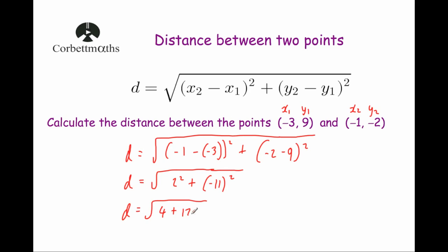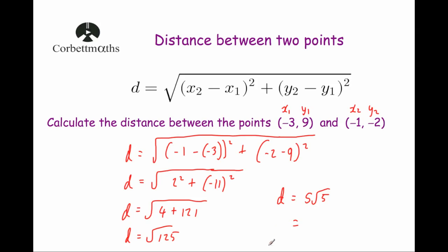So that's 4 plus 121, giving us d equals the square root of 125. The square root of 125 can be written as 5 root 5, or as a decimal, the square root of 125 is approximately 11.18. And that's it.